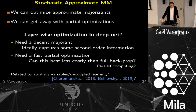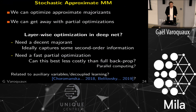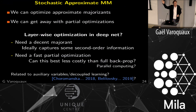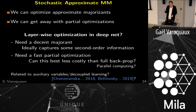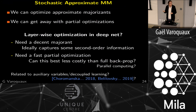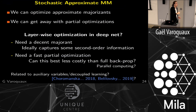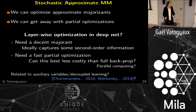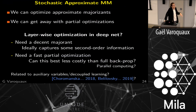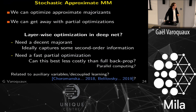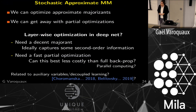Can we apply this to deep nets? I don't know at all, but I think we should try. What we need: a decent majorization — ideally capturing some second-order information, because that will make it robust to ill conditioning. We need fast partial optimization, and I stress fast — if we do back-propagation in a sequential way it won't be beneficial. But we can do things like partial backprop, parallel computing maybe.